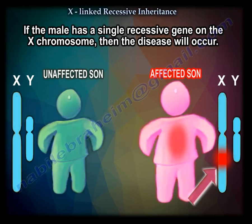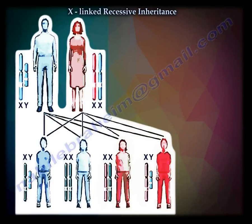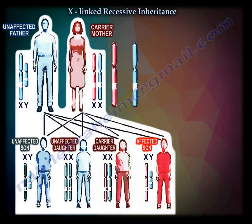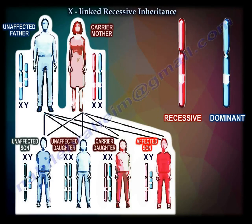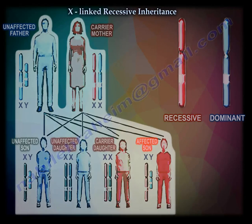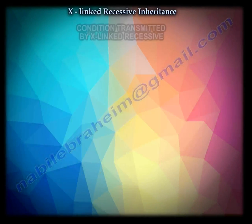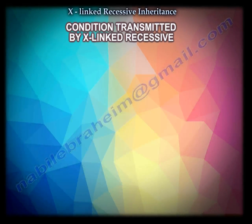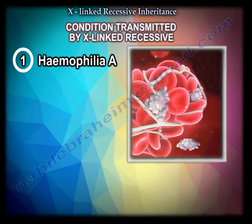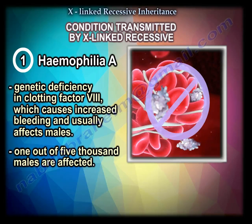Here is an example of a diagram that shows how the disease is transmitted. The conditions transmitted by X-linked recessive include: number one, hemophilia A, which affects factor VIII. One in 5,000 males are affected.